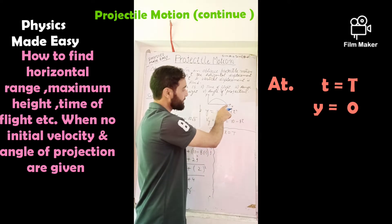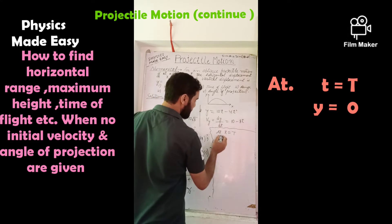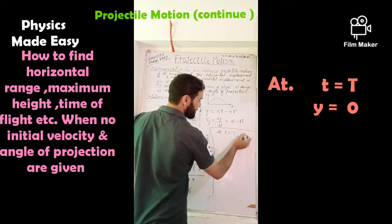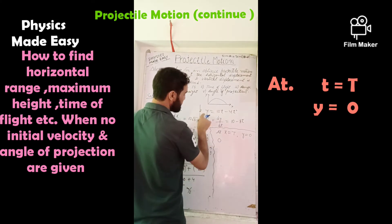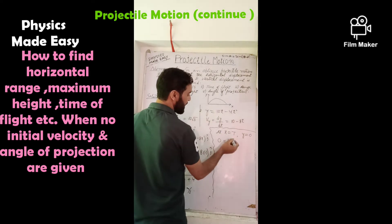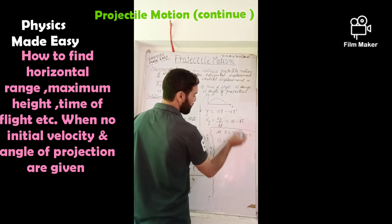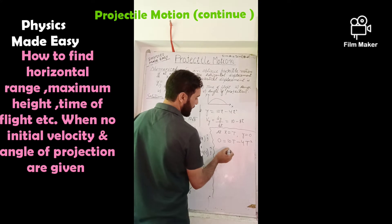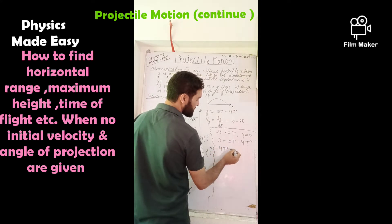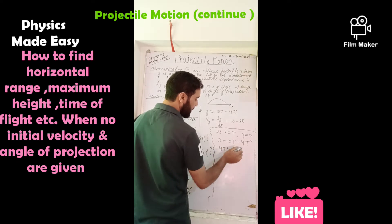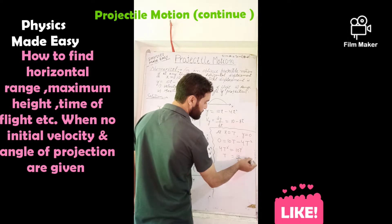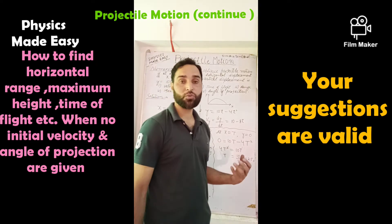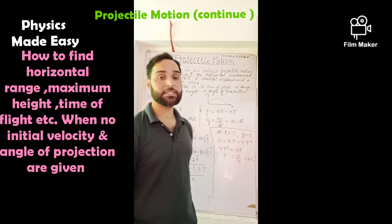At t = T (time of flight), y = 0. Using this in the vertical displacement equation: 0 = 10T - 4T². This gives 4T² = 10T, so T = 10/4 = 2.5 seconds. The time of flight is 2.5 seconds, meaning the particle spends 2.5 seconds in the air.